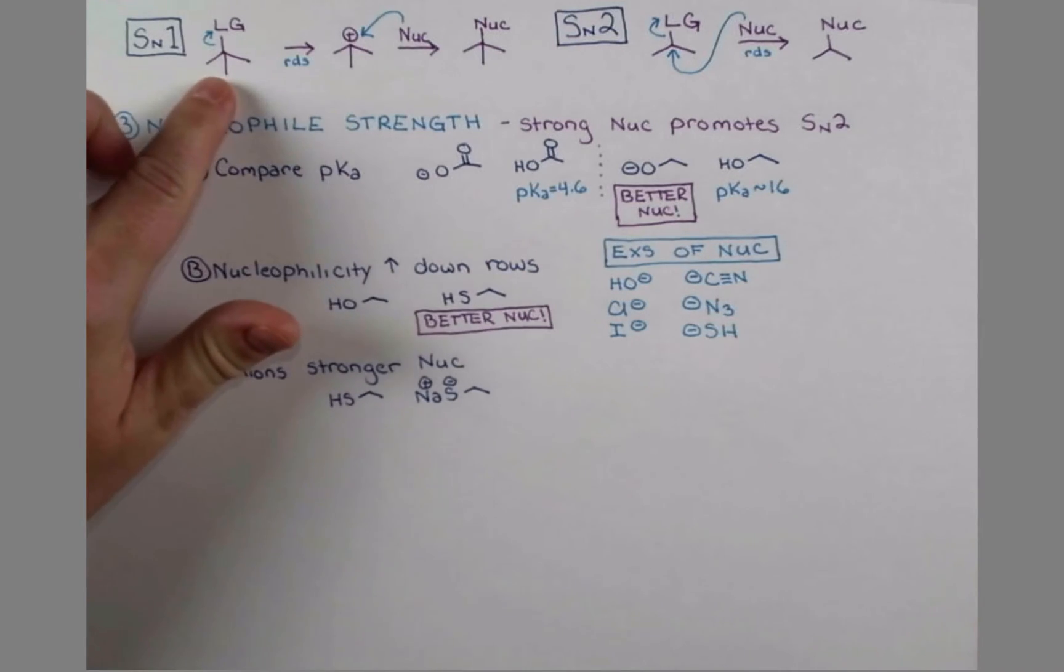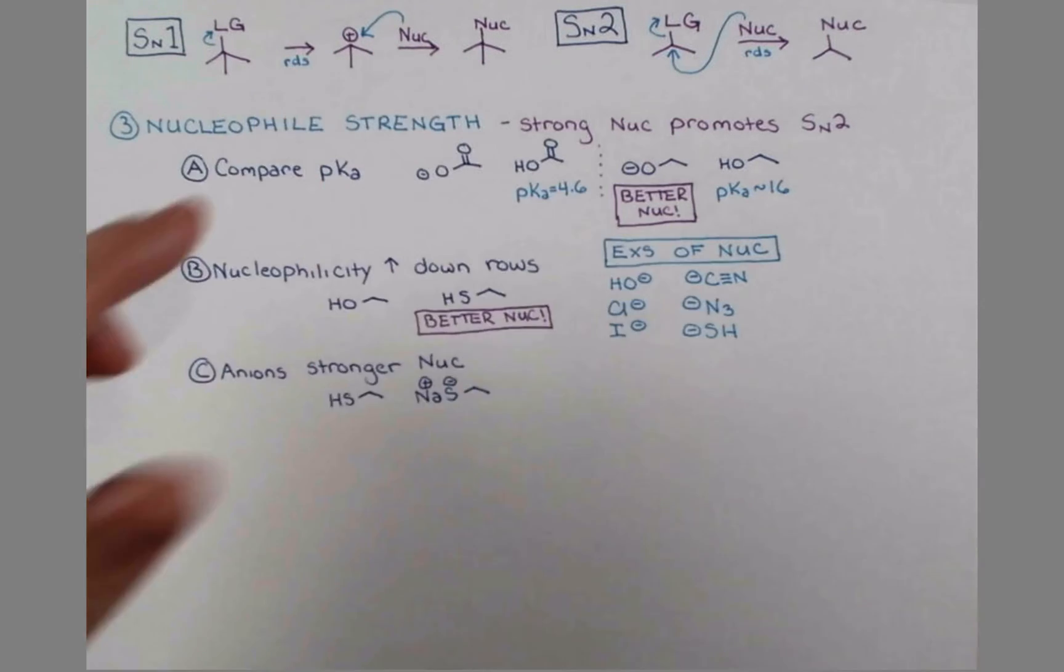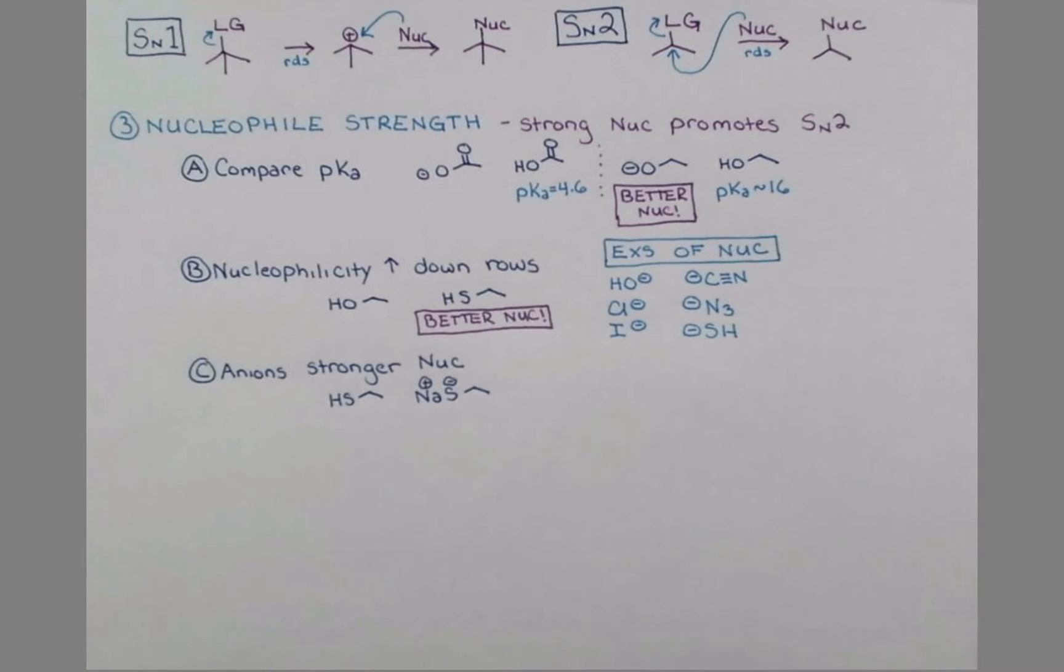Now in the SN1 reaction, the leaving group leaves on its own. The nucleophile doesn't need to be a powerful nucleophile. And we can actually even have neutral nucleophiles add to substrates in SN1 reactions. So let's write down a couple examples of neutral nucleophiles. We have water. Ammonia can be a good nucleophile in SN1 reactions. And in the previous video, we talked about acetate or acetic acid being a nucleophile in SN1 reactions.